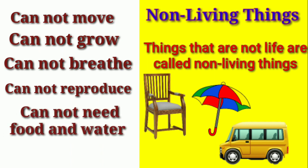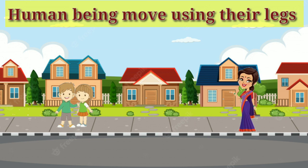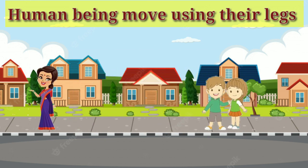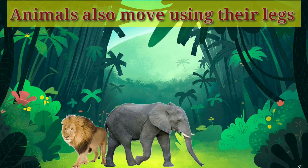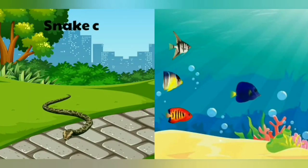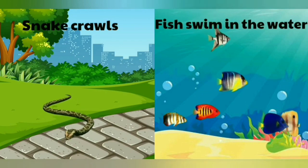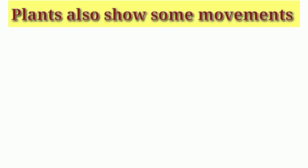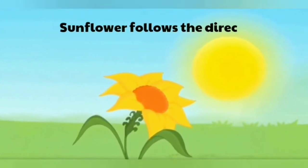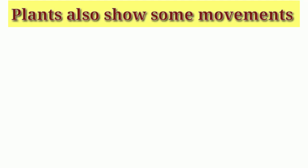Living things can move. Human beings move using their legs. Animals also use their legs to move. Animals without legs crawl, swim, or slide using their body. Plants also show some movements, like sunflowers follow the direction of the sun.